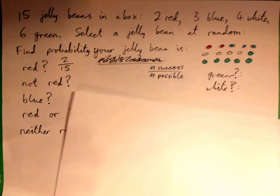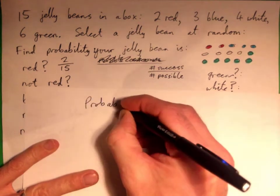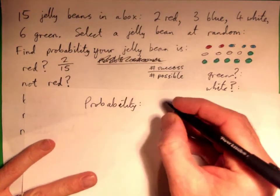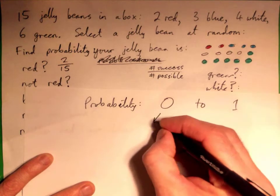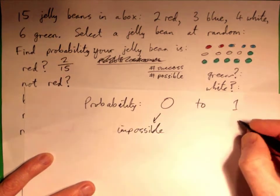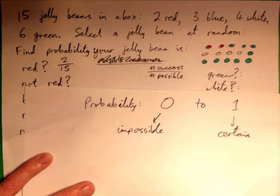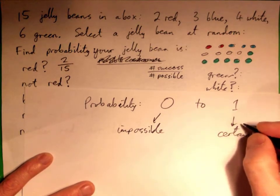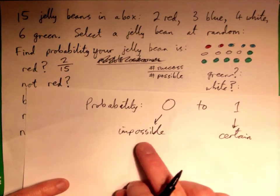Okay, so probability goes from zero to one. Zero means impossible, and one means certain. Zero is impossible. Certain is night follows day or whatever, right? Impossible.